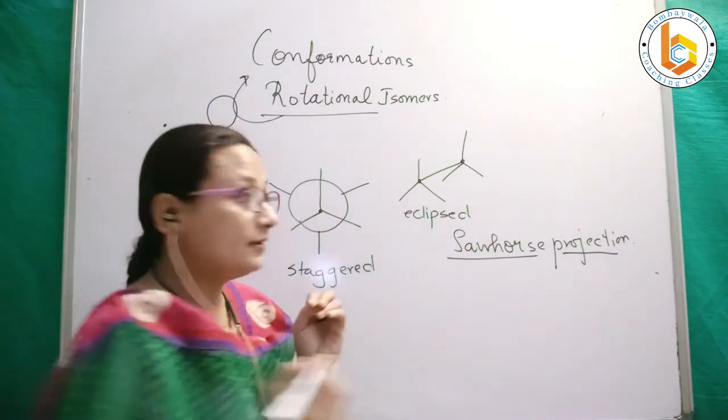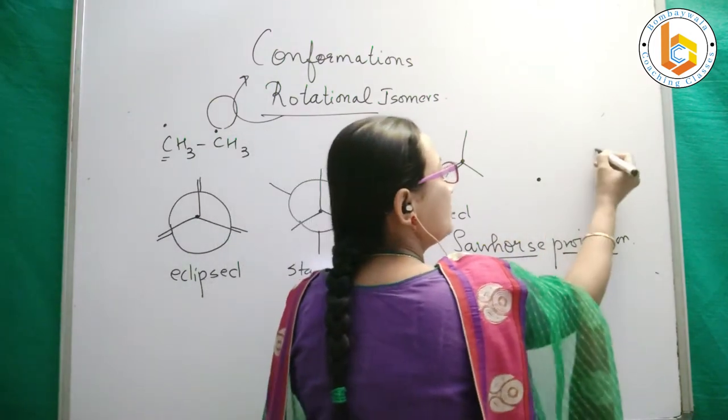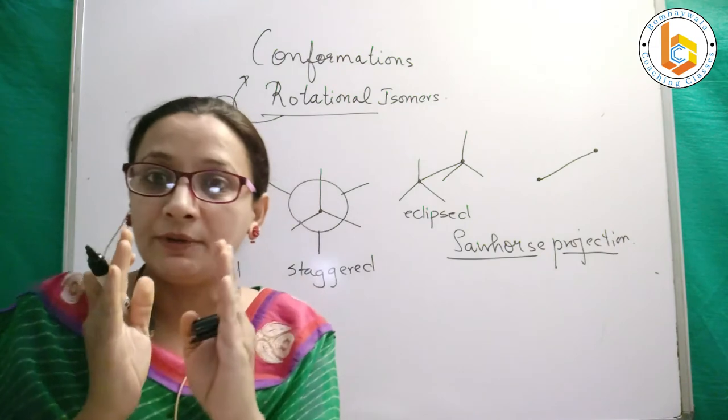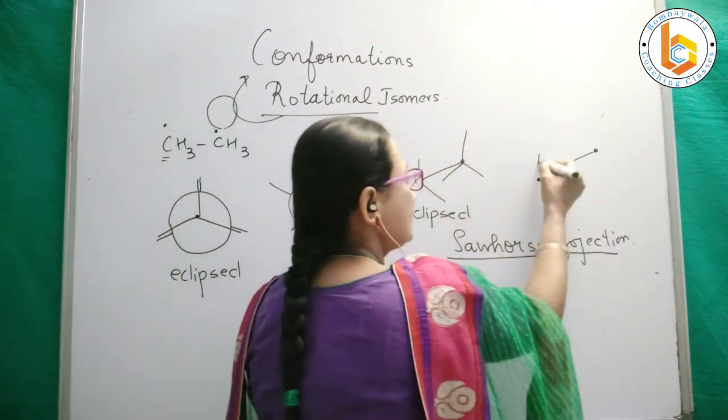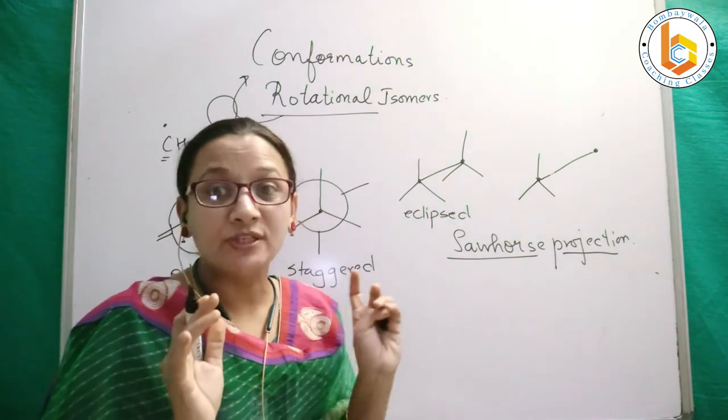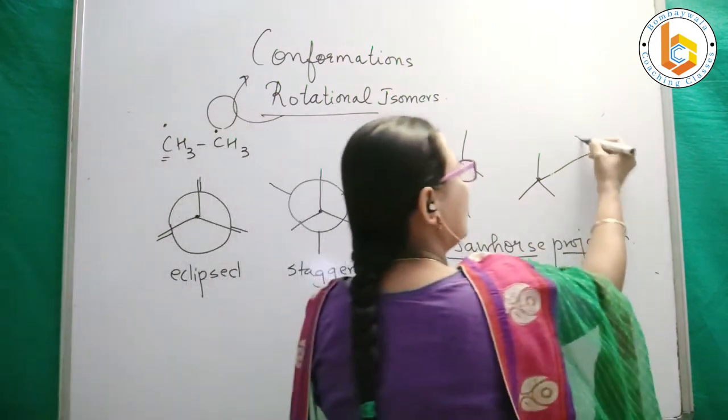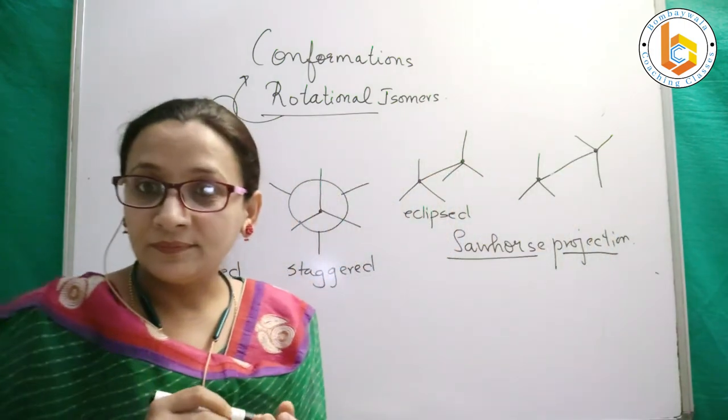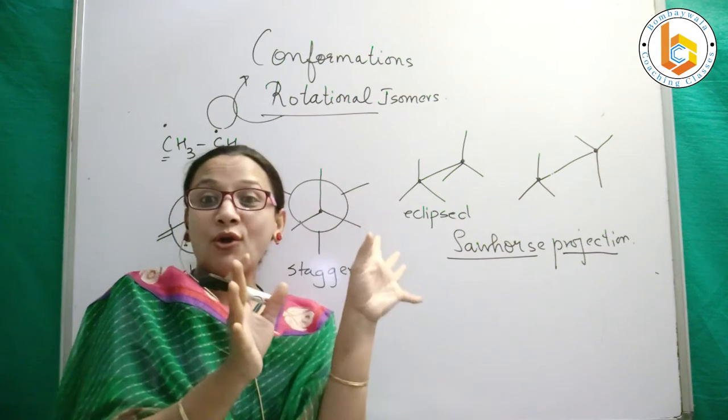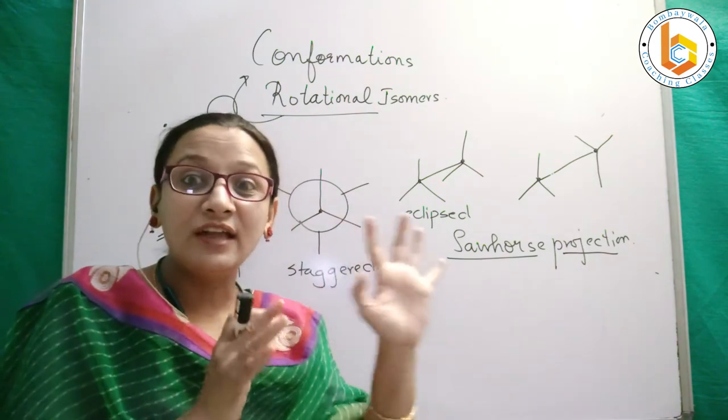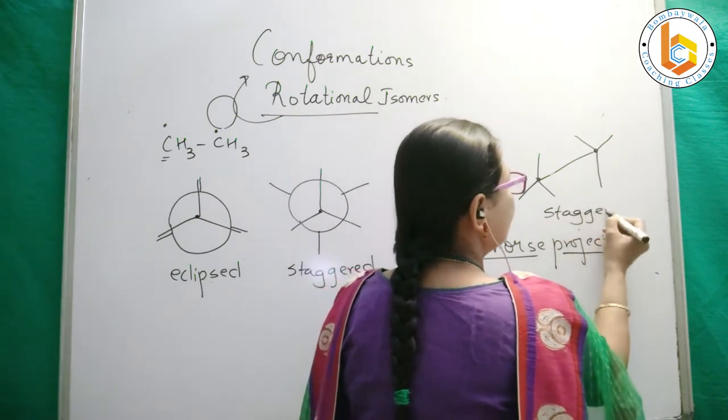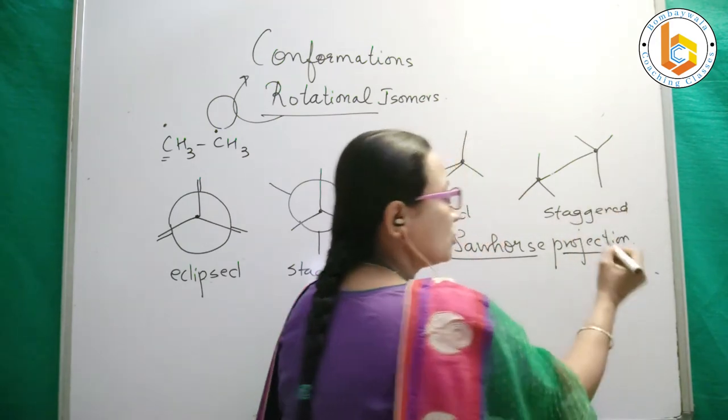To write it in staggered form: front carbon is a dot, back carbon is a dot, with a line joining between the carbons. The front carbon has three hydrogens attached because it's ethane. For the back carbon, I write it as I am looking at it in this three-dimensional view, where I am able to see all the bonds. So this is staggered, as per sawhorse projection.